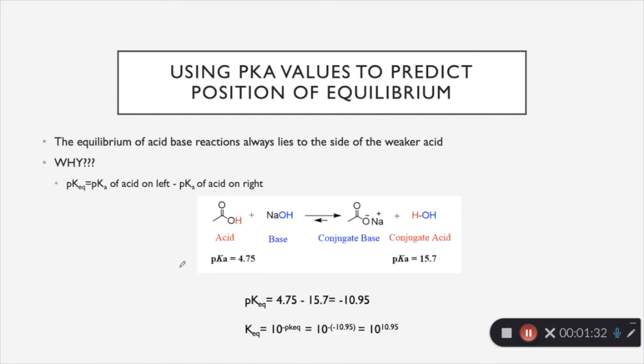So this doesn't really tell us much as far as where equilibrium lies, because to determine where the equilibrium lies, we need to find the KEQ. And so we need a new equation. The KEQ is going to equal 10 to the negative pKEQ.